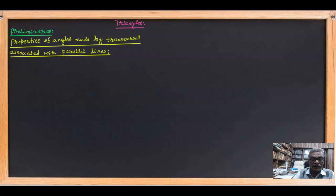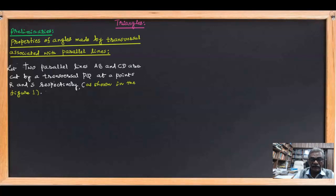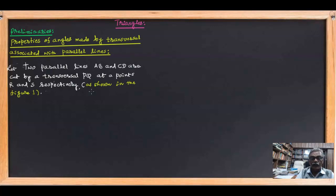In this video we are going to consider parallel lines and transversals, and the angles made by the transversal with two parallel lines — what are those angles and what are their relations. Two parallel lines AB and CD are cut by a transversal PQ at points R and S respectively, because there are two parallel lines and a transversal cutting them at two points, namely R and S.